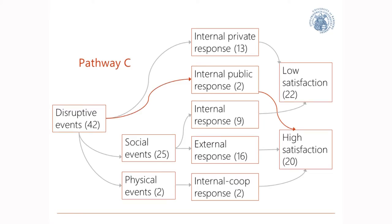Based on Pathways A and B, you'd assume an internal response never leads to satisfaction. Not quite — sometimes it does work, but only if the public actor takes the initiative, not the private one. Public agencies are somewhat more sensitive to context than a contractor is. Builders want to build stuff; they don't care as much about the environment. So public agencies actually can solve problems with an internal response. In another pathway, if they cooperate, an internal response can also work, but only in the case of a physical event.